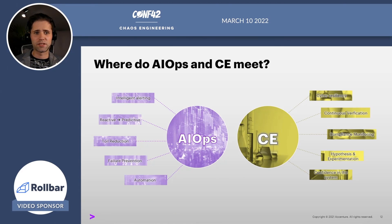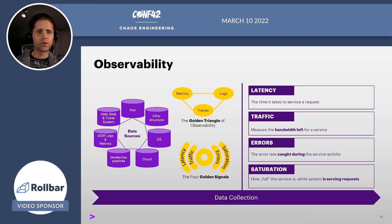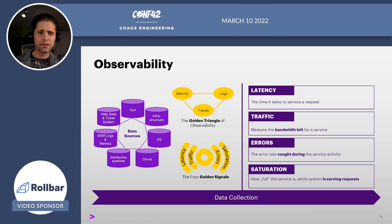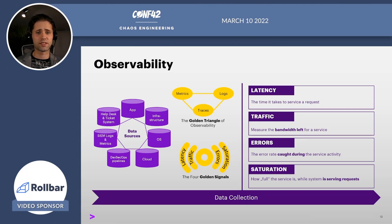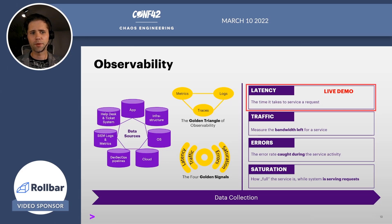We talked about AIOps and chaos engineering — but where do these meet? The most important intersection for today's scope is observability. Observability is the ability to measure a system's current state based on the data it generates, such as logs, metrics, and traces — the so-called golden triangle of observability. The golden triangle signals are latency, traffic, errors, and saturation. In our case, as you will soon see, latency will be the one we'll use for our upcoming live demo.